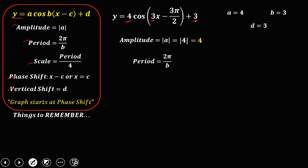For the period, that's 2π over b. Since b is equal to 3, the period is 2π/3, and that's 1 period or 5 key points.